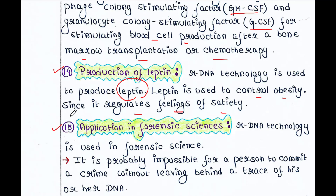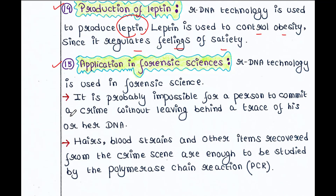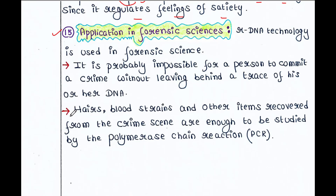Next is application in forensic sciences. rDNA technology is used in forensic science. It is practically impossible for a person to commit a crime without leaving behind a trace of their DNA. Hairs, blood stains, and other items recovered from a crime scene are enough to be studied by PCR, and based on different DNA markers we can identify the culprit.